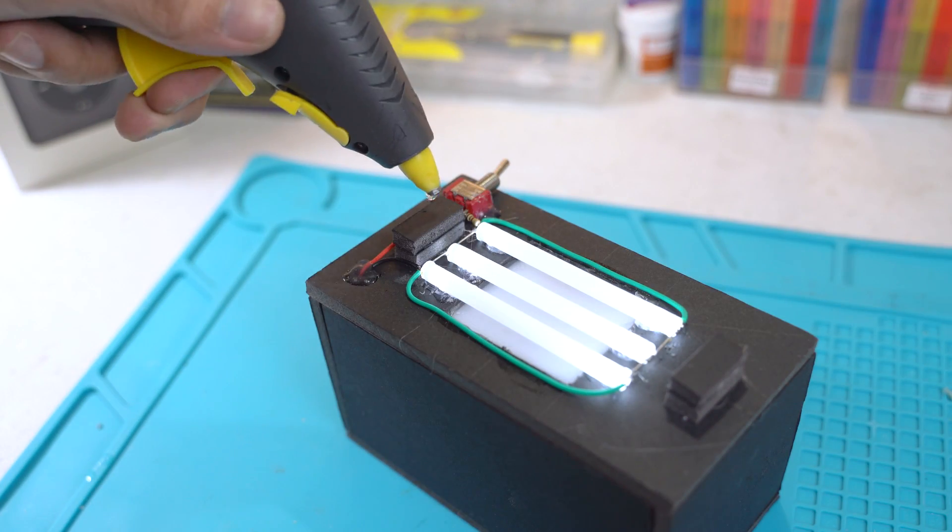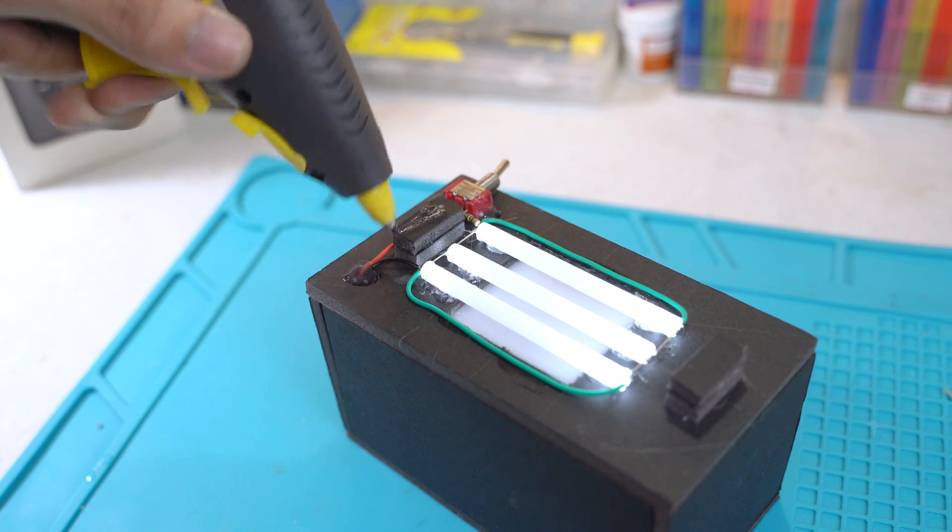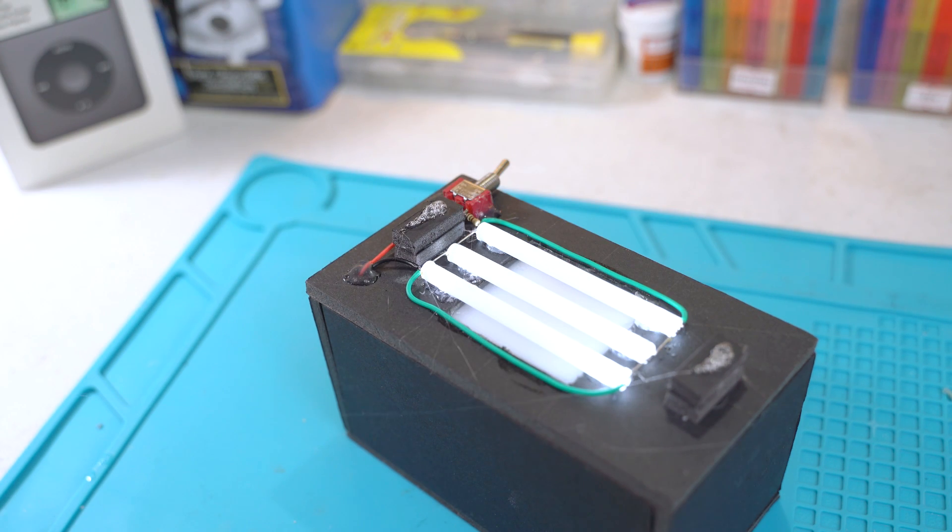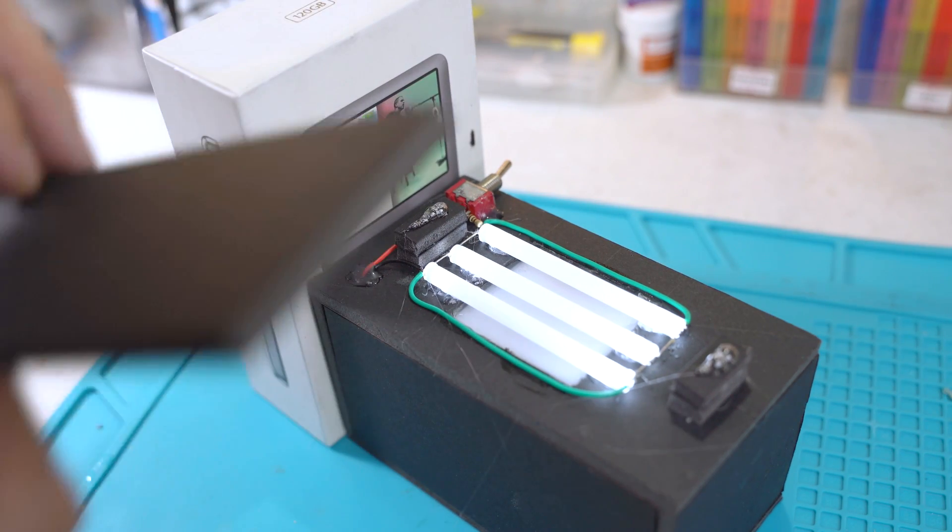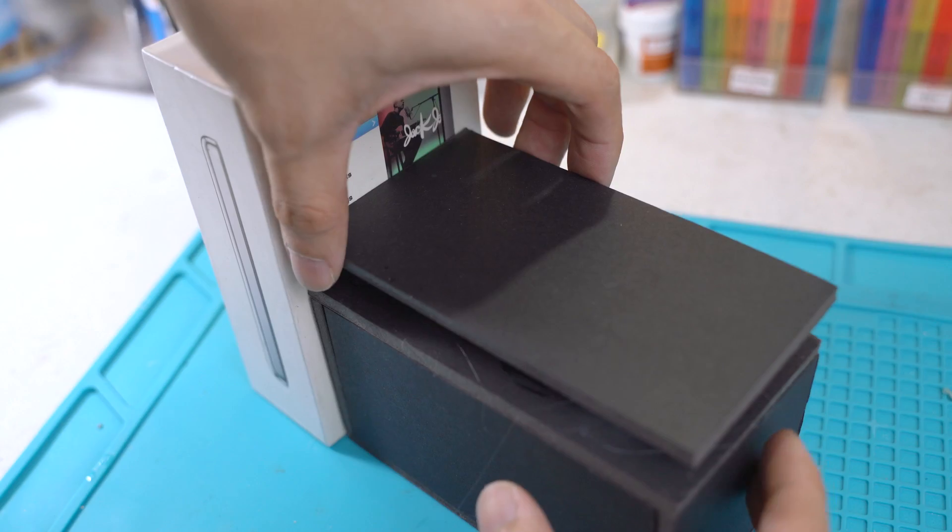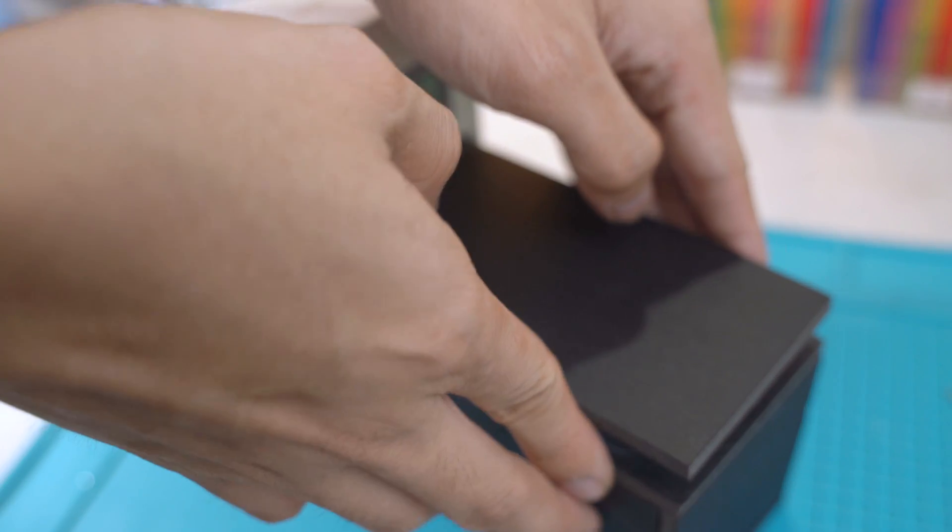I won't be completely sealing the bottom since the glowing effect kind of looks cool. Instead I stack two pieces of foam board as pillars. Then hot glue the piece of foam board for the base. Be sure to apply enough hot glue for it not to wobble later on.